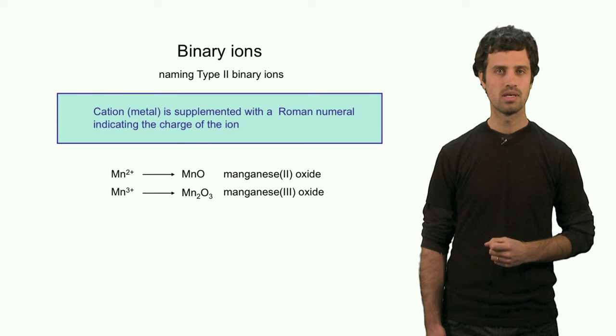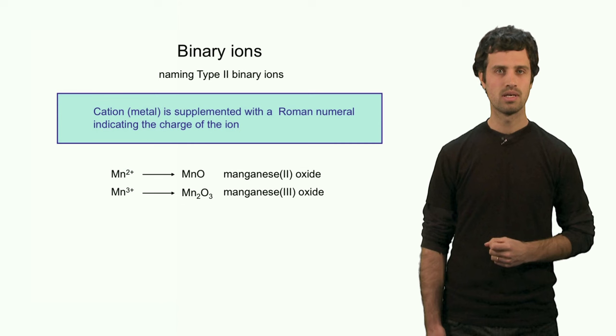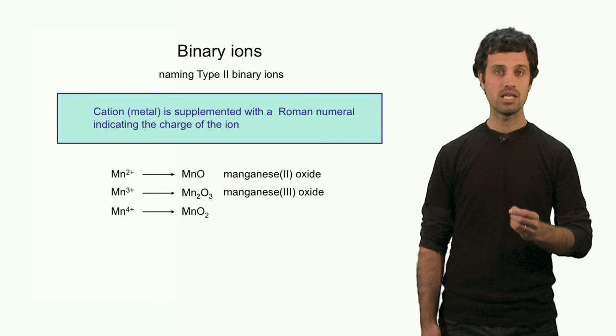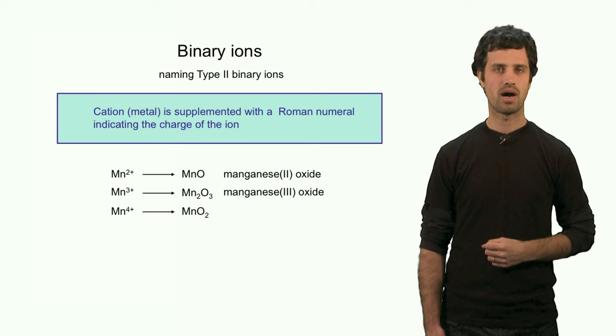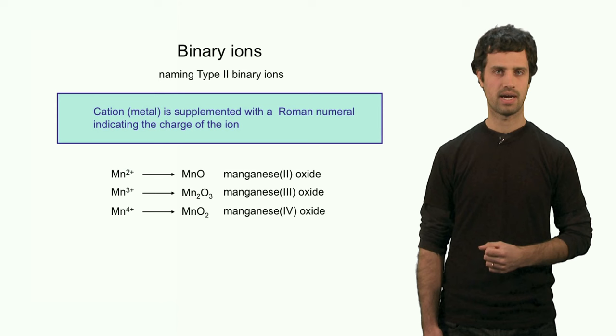Manganese 3 plus, if we form an oxide with this, this would be called manganese(III) oxide. Manganese 4 plus cation, if we form an oxide with those, that compound would be called manganese(IV) oxide. So we always have to specify with the Roman numeral the charge of the cation.